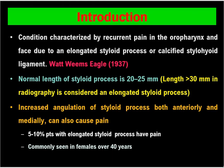Most of the time it is seen on radiography, either CT scan or X-ray. Sometimes increased angulation of the styloid process, both anteriorly and medially, can also cause pain because it can press on the tonsillar fossa and the glossopharyngeal nerve gets irritated. Around 5 to 10% of patients with elongated styloid process have pain. It is commonly seen in females over 40 years of age, but can happen equally in males over 40 years as well.